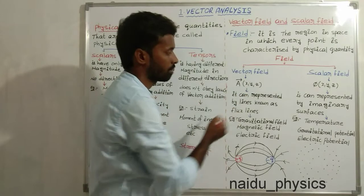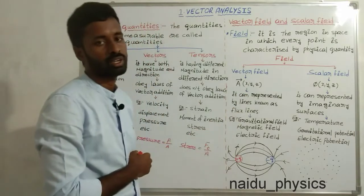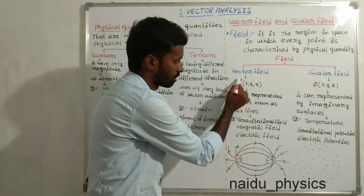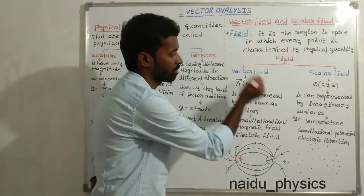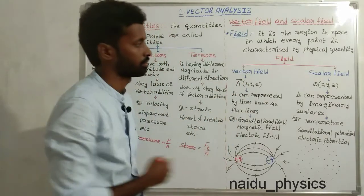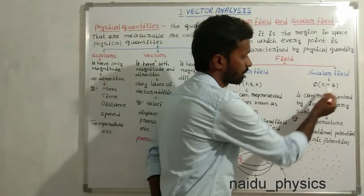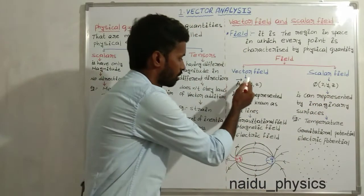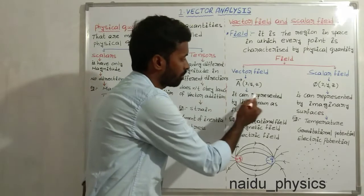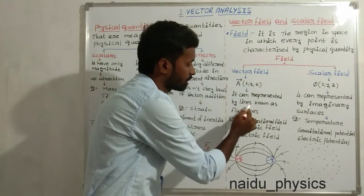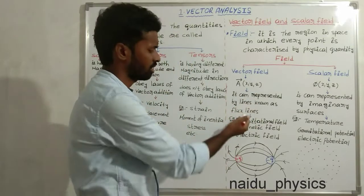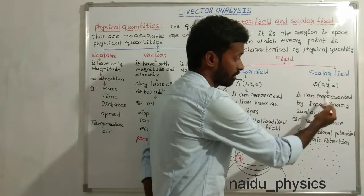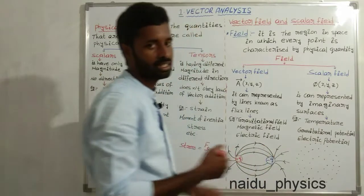A vector field can be represented as A-bar of (x, y, z), where the bar represents direction and A(x, y, z) represents magnitude. A scalar field can be represented as φ(x, y, z). Graphically, a vector field can be represented by lines known as flux lines. A scalar field can be represented graphically by imaginary surfaces.